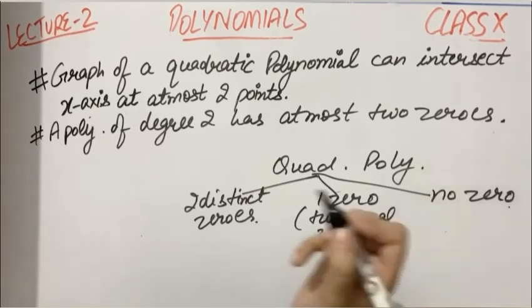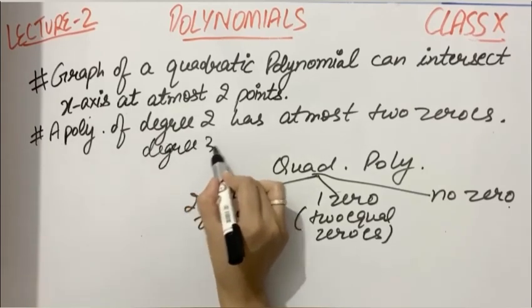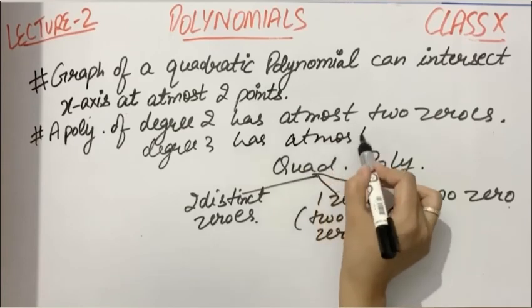Now same is with cubic polynomial. A polynomial of degree 3 has at most three zeros.